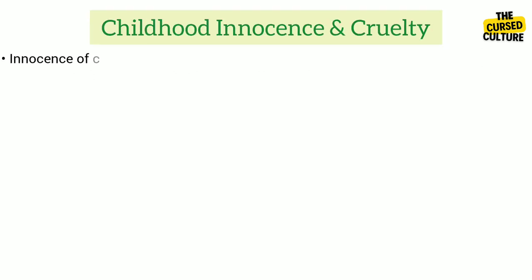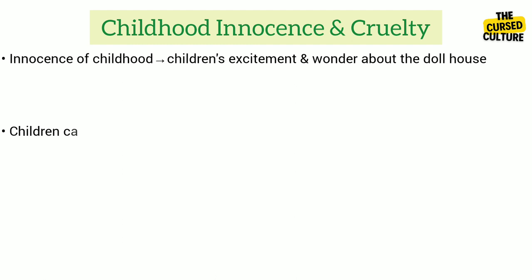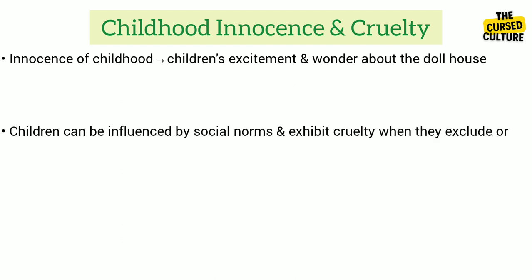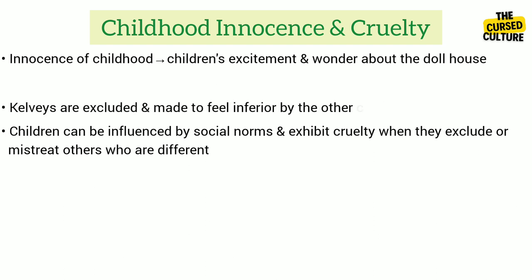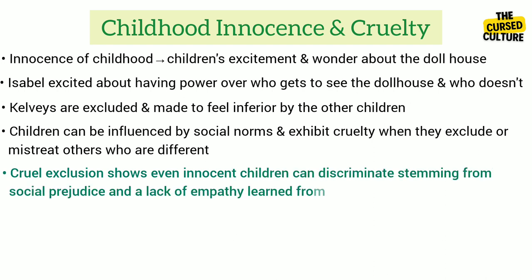In the story, the innocence of childhood is shown through the children's excitement and wonder about the dollhouse, but it is juxtaposed with the cruelty they display by excluding the Kelvies. This highlights how children, while often pure at heart, can also be influenced by social norms and exhibit cruelty when they exclude or mistreat others who are different. At first, the Burnell sisters are full of excitement and innocence, proudly showing the beautiful dollhouse to their classmates — representing the pure, joyful side of childhood. The Kelvies, who are from a lower social class, are excluded and made to feel inferior. The Burnell sisters, especially Isabel, are initially excited about having power over who gets to see the dollhouse. This cruel exclusion demonstrates how even innocent children can engage in discrimination stemming from social prejudice and a lack of empathy learned from the adults around them.